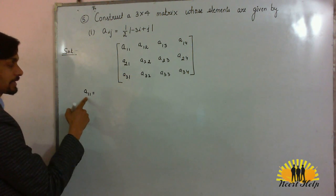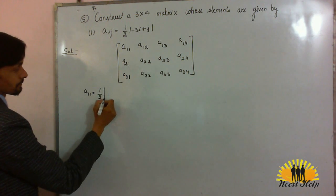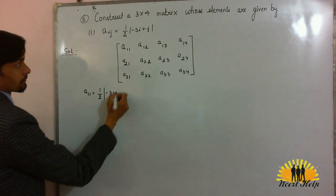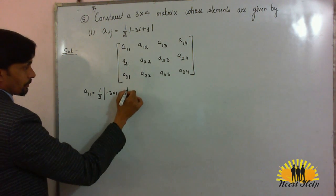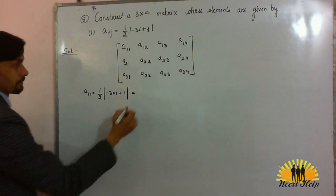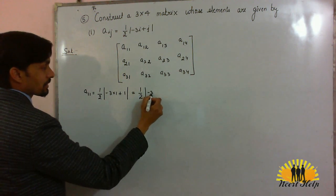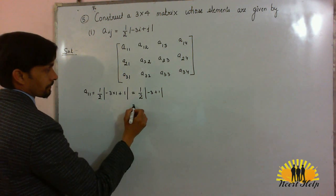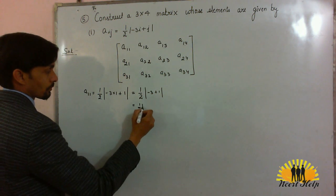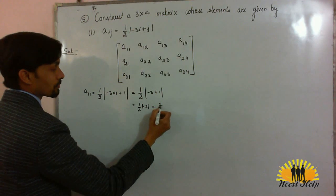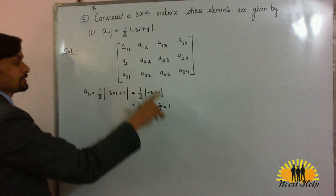A11: i is 1, j is 1, put here. Minus 3i is minus 3 into 1, plus j is plus 1: minus 3 plus 1 equals minus 2, and the absolute value of minus 2 is 2. So finally we get 1/2 × 2 = 1. The first element is 1.